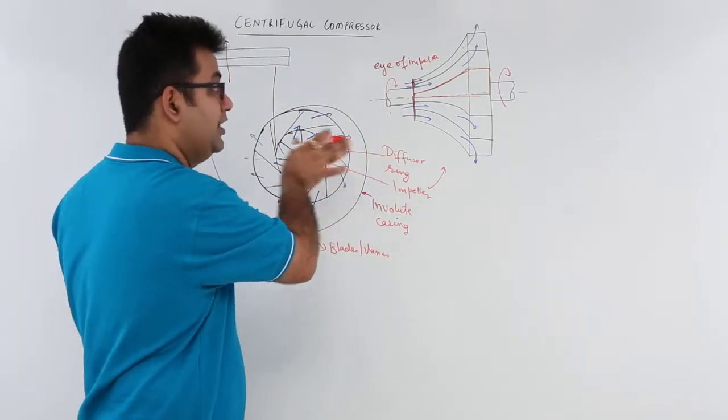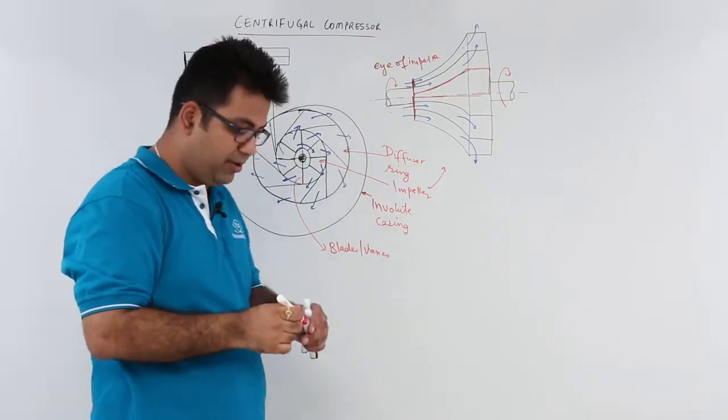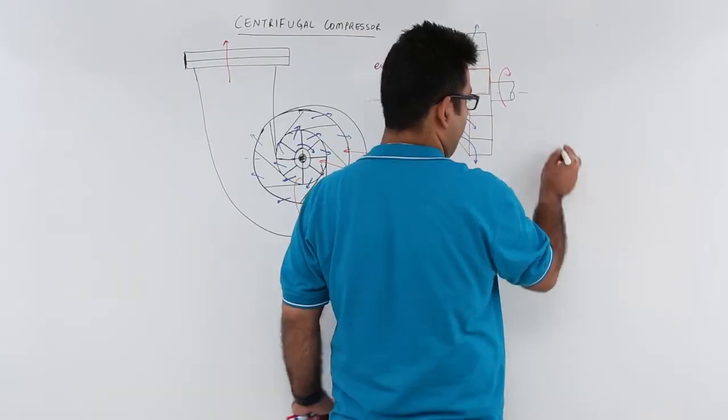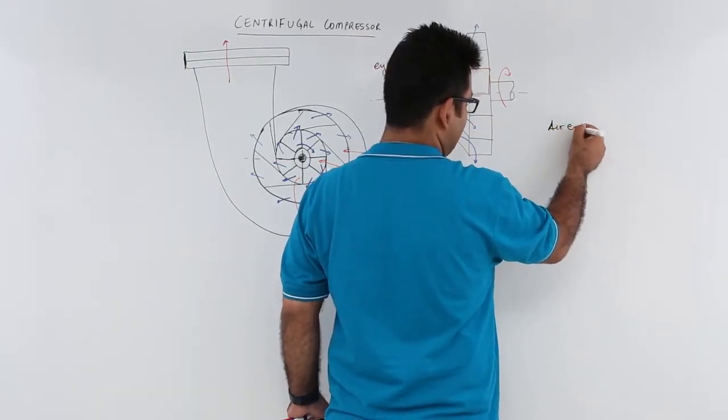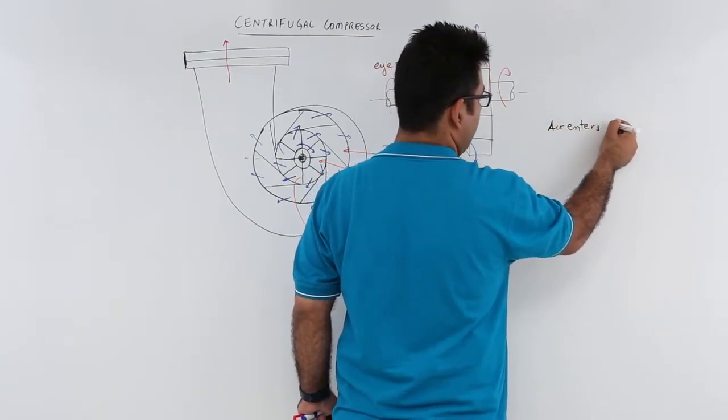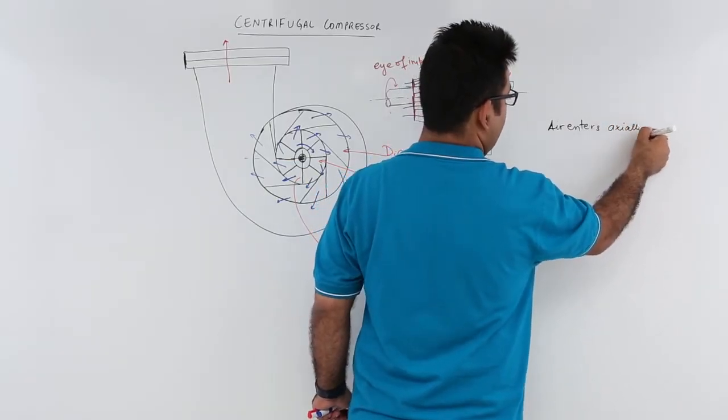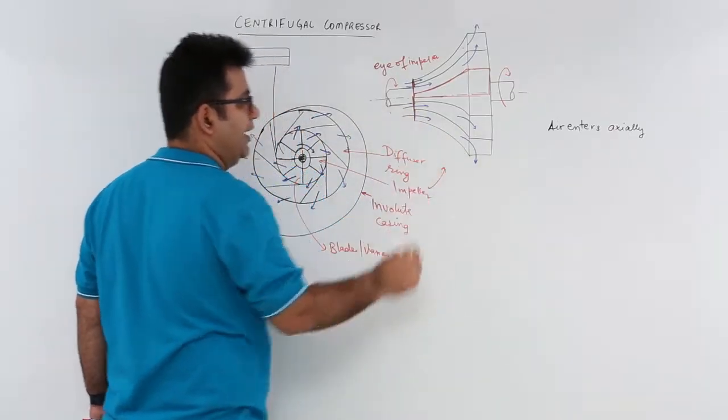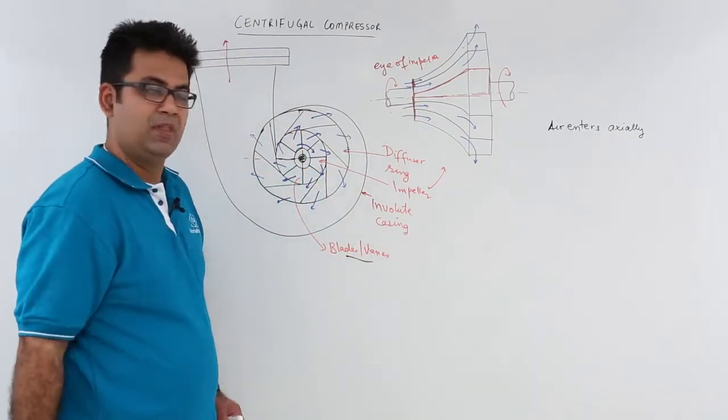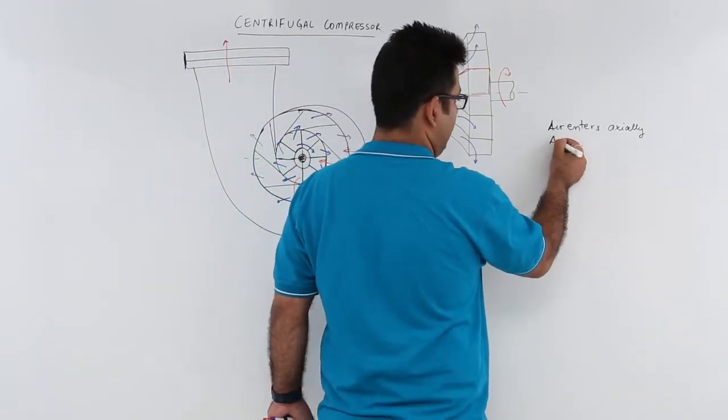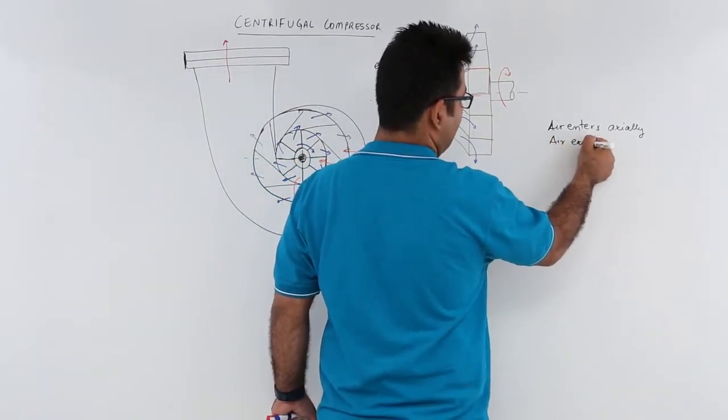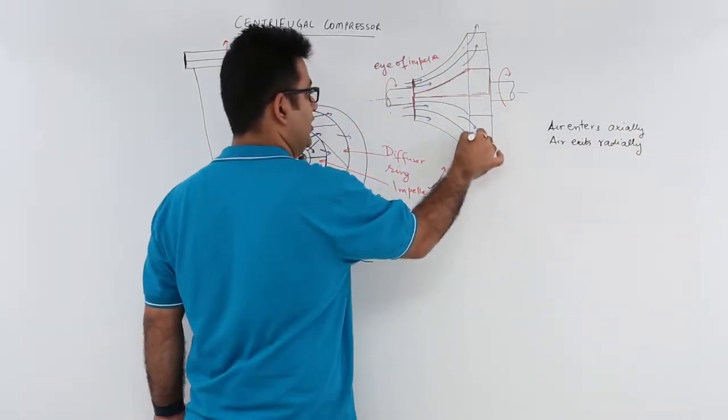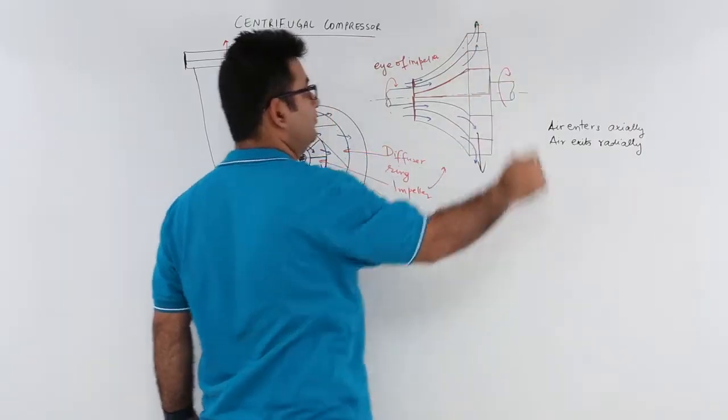So this is a very important thing to remember and understand that in this kind of a compressor, air enters axially. So this is how the air will enter. It will move over the blades or the vanes. And it will exit, the air exits radially. So this is how the air will exit.